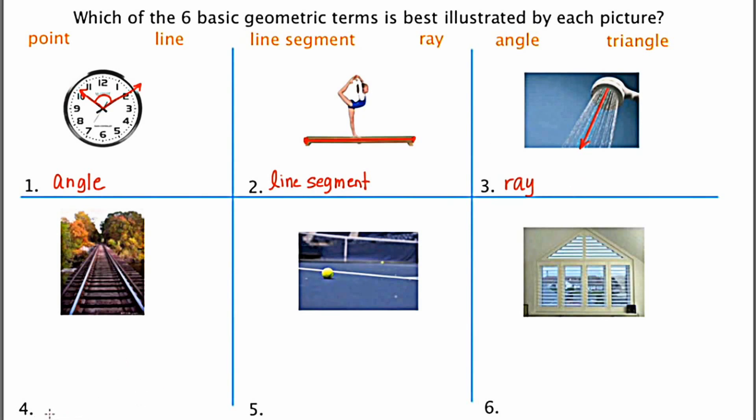And number four, here we have a line or actually two lines as illustrated by these railroad tracks. Now we know the tracks don't actually go on forever, but it's a nice representation of something that looks like a line.